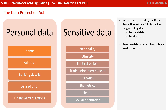Information covered by the Data Protection Act tends to fall into two broad categories: personal data and sensitive data. Personal data includes things like names, addresses, bank details, date of birth, and details of financial transactions. Sensitive data is information such as your nationality or ethnicity, political beliefs, genetics, biometrics, etc. Sensitive data is subject to additional legal protections.